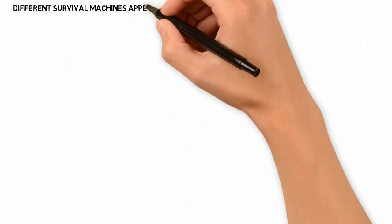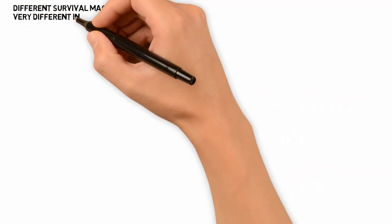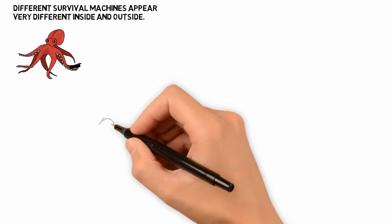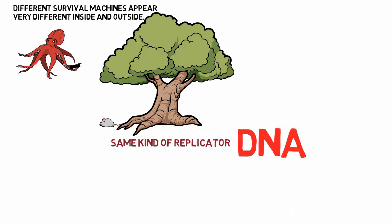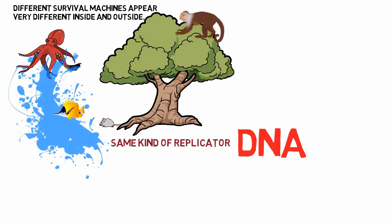Different survival machines appear very different inside and outside. For example, an octopus is nothing like a mouse or an oak tree. However, the fundamental chemistry of their genes is the same. We are all survival machines for the same kind of replicators — molecules called DNA. A monkey is a machine that preserves genes up trees, and a fish is a machine that preserves genes in the water.